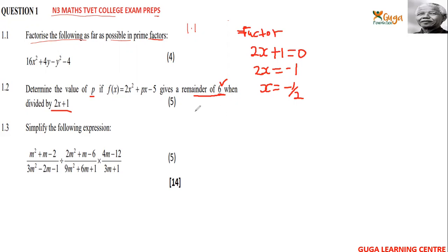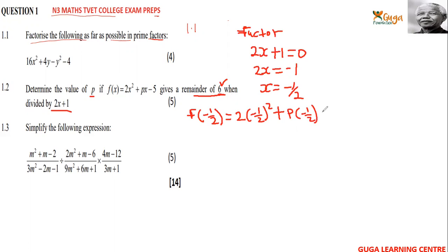So we have f(negative ½): it equals (negative ½)² plus p times (negative ½) minus 5. This is the value of c in the quadratic equation, and this should be equal to the remainder, which is 6.